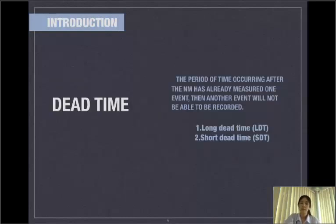Dead time is the period of time occurring after the neutron monitor has already measured one event, then another event will not be able to be recorded. Long dead time or LDT is 1.2 milliseconds and short dead time is 10 microseconds.